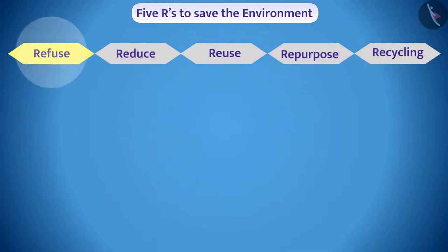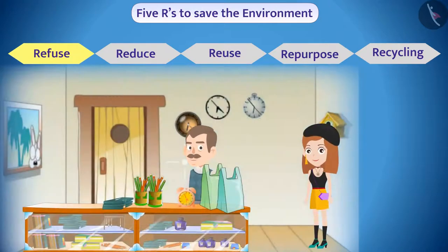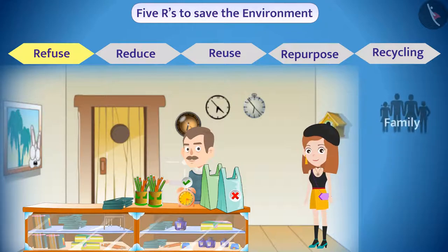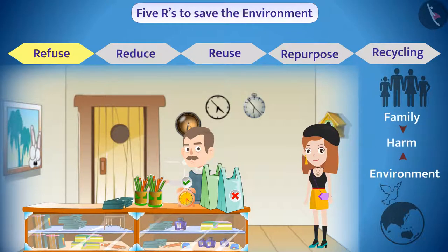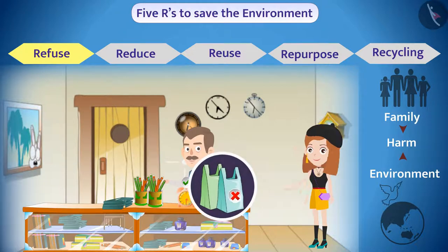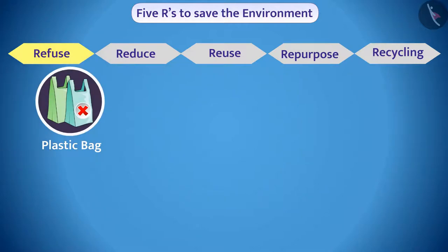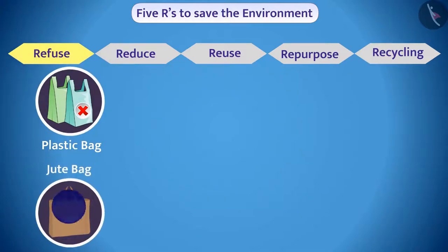Refuse. While buying things, we should refuse to take all those things which can harm a family and the environment. For example, we can refuse to take plastic bags. Instead, we can use cloth or jute bags.